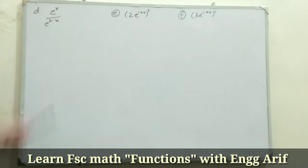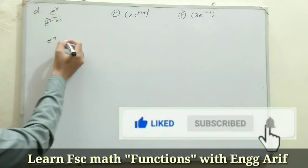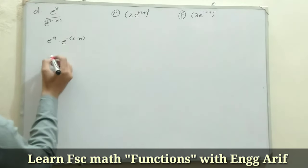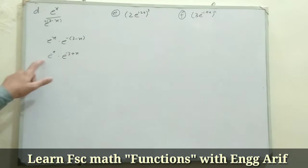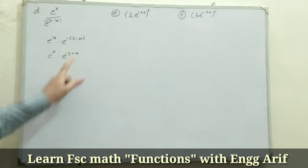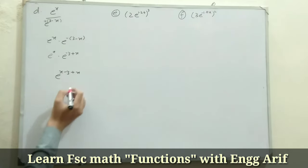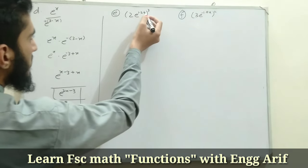For part d we have e^x divided by e^(3-x). Using the same law as part c, e^(3-x) moves to the numerator and its power becomes negative: -(3-x) = -3 + x. So we get e^x · e^(-3+x). Adding the powers using the product law: x + (-3 + x) = 2x - 3. The result is e^(2x-3).